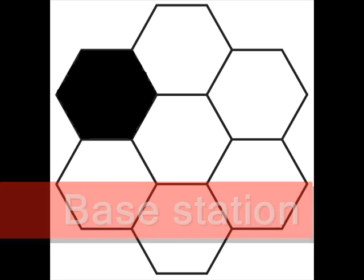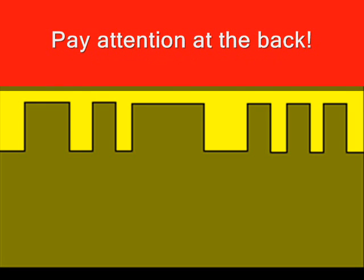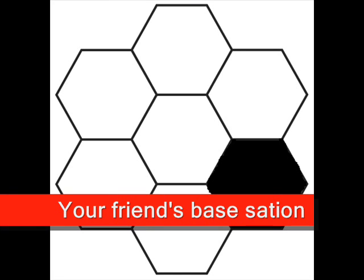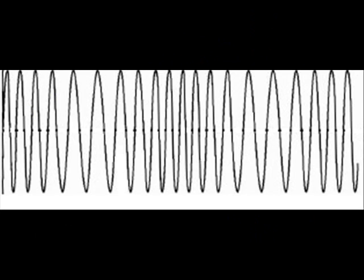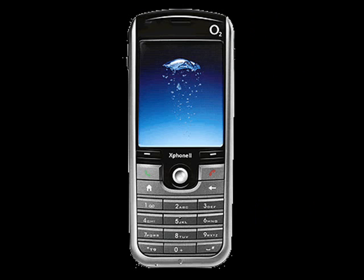The microwave signal is converted back to a digital electrical signal and sent through the computer to your friend's nearest base station. It is then transmitted using microwaves to your friend's mobile phone.